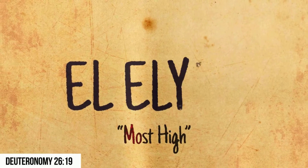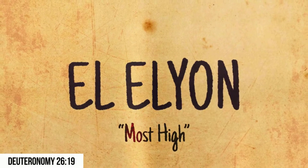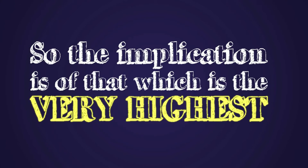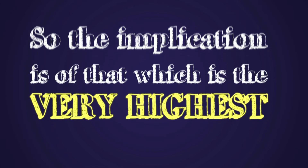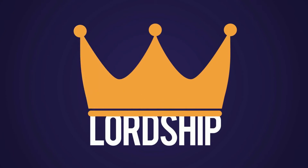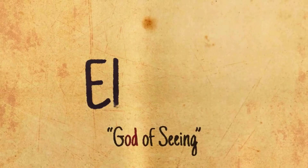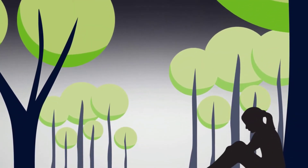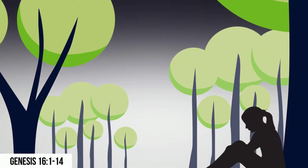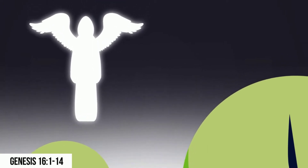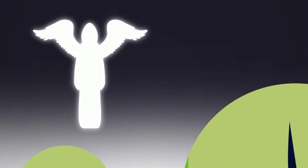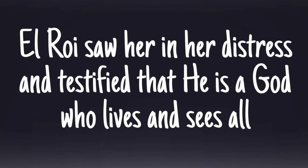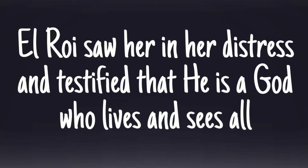El Elyon — Most High. Derived from the Hebrew root for "go up" or "ascend," so the implication is of that which is the very highest. El Elyon denotes exaltation and speaks of absolute right to lordship. El Roi — God of Seen. The name ascribed to God by Hagar, alone and desperate in the wilderness after being driven out by Sarah. When Hagar met the angel of the Lord, she realized she had seen God himself in a theophany. She also realized that El Roi saw her in her distress and testified that he is a God who lives and sees all.